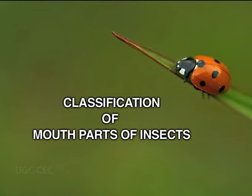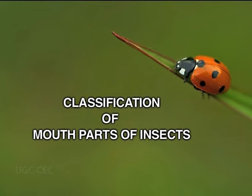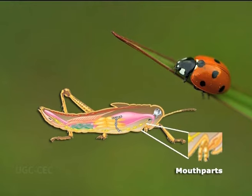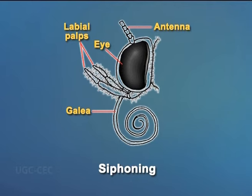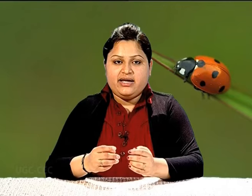Now we will see the classification of mouth parts of insects. Insects are the most successful class of invertebrates within the arthropod phylum. The mouth parts of arthropods have evolved into a number of forms, each adapted to a different style or mode of feeding. Insect mouth parts exhibit a range of forms. The earliest insects had chewing mouth parts. Specialization includes mouth parts modified for siphoning, piercing, sucking, and sponging. We will discuss the basic elements of mouth parts of class Insecta under the arthropod phylum.